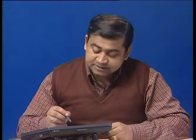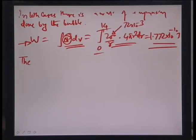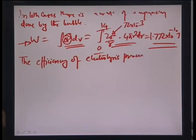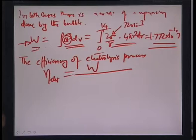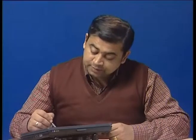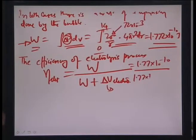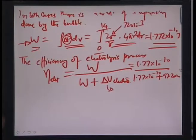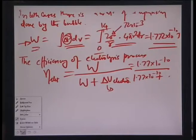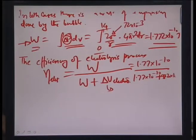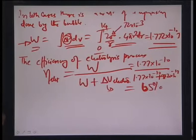The efficiency of the electrochemical (electrolysis) bubble production process is: η_electro = W / (W + ΔU_electro) = 1.77×10⁻¹⁰ / (1.77×10⁻¹⁰ + 97.2×10⁻¹²) ≈ 65 percent.